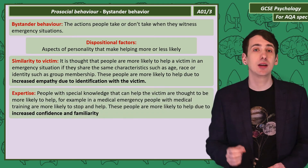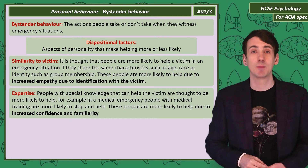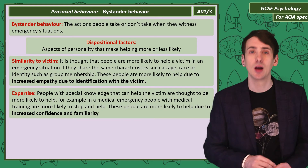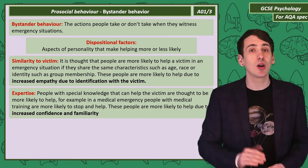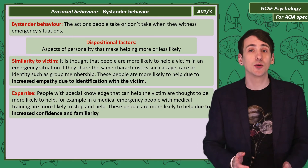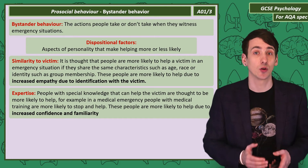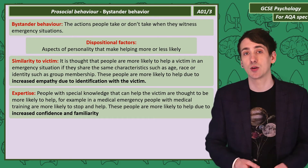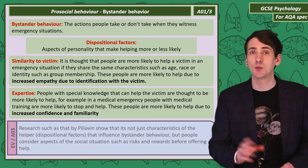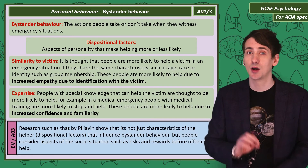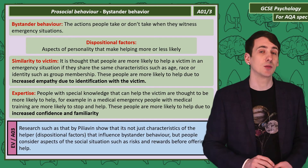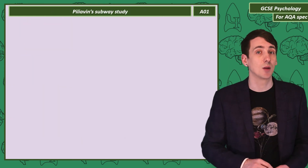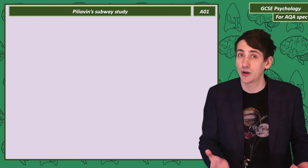Another dispositional trait is an individual's level of expertise. If in an emergency situation you have specialist knowledge that can help, such as medical training, you're more likely to offer help. This is thought to be because you have the training, so you're more confident and more familiar in medical situations. We could criticise the dispositional explanation for bystander behaviour by looking at research by Piliavin as evidence that aspects of the social situation are also important in determining whether we help or not.